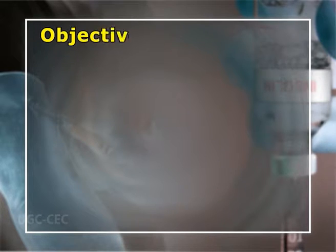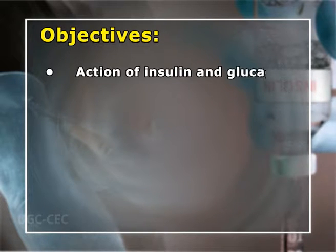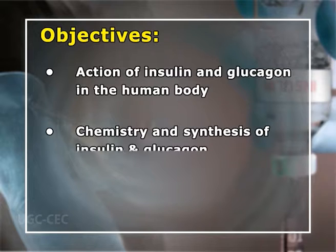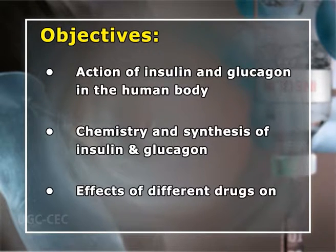Hello and welcome to our today's lecture on insulin, hypoglycemic drugs, glucagon, and drugs affecting calcium balance. The main objectives of today's study are: to introduce the action of insulin and glucagon in the human body, provide a precise account of the chemistry and synthesis of insulin and glucagon, and study the effects of different drugs on calcium balance.